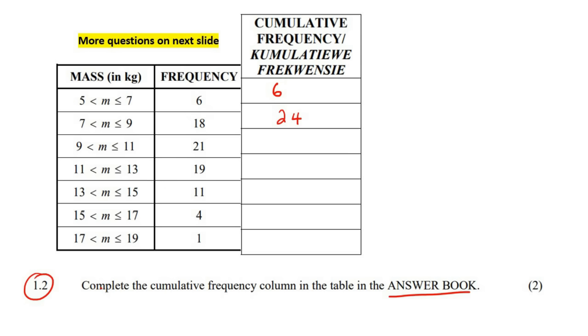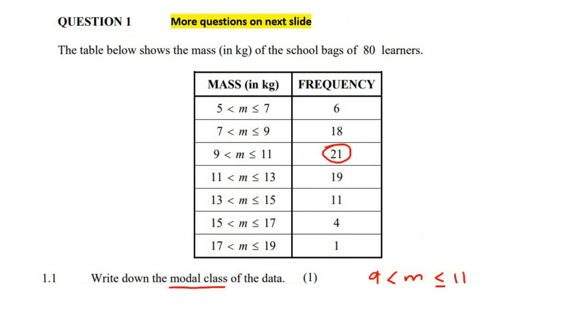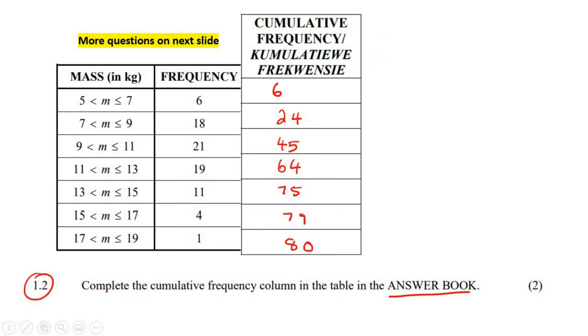And now we're going to say, 24 and then there's another 21 people, so that's going to be 45. And then there's another 19 people, so that's 64. Then there's 11 people, so that's 75. Then there's another 4 people, that's 79. And then there's another 1 person, so that's 80. And that makes sense because in the beginning they did tell us there are 80 learners.